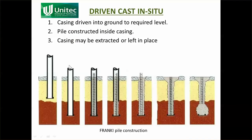Driven cast-in-situ piles involve driving a steel casing — usually with a closed, pointed end — into the ground, giving you an open-ended tube. Reinforcing is then placed into the tube, concrete is poured in, and the steel casing is pulled out while the concrete is still wet. This causes the concrete to settle into a corrugated profile, which provides better friction between the pile and the surrounding ground and also helps with tension resistance. Additionally, concrete can be pumped to form a bell at the bottom — this is known as the Frankie pile construction method.